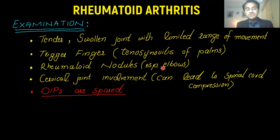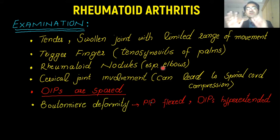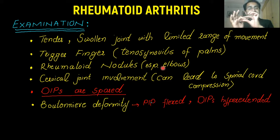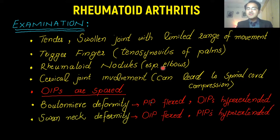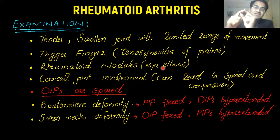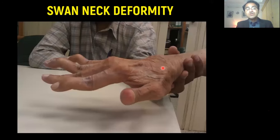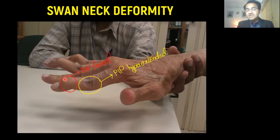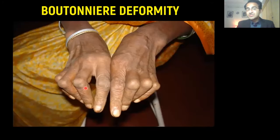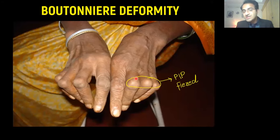You may also appreciate Boutonniere's deformity, where the proximal interphalangeal joint is flexed and the distal interphalangeal joint is extended — PIPs are flexed and DIPs are extended. In contrast, swan neck deformity is the opposite: the distal interphalangeal joint is flexed and the proximal interphalangeal joint is hyperextended. This picture shows swan neck deformity with the PIP hyperextended and DIP flexed, and this other picture shows Boutonniere's deformity with PIPs flexed and DIPs hyperextended.